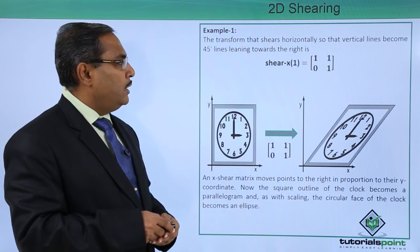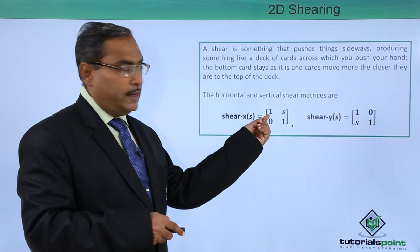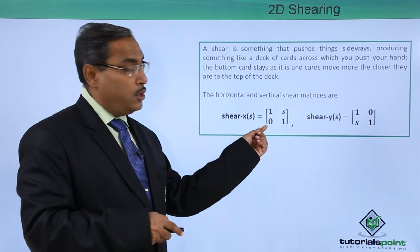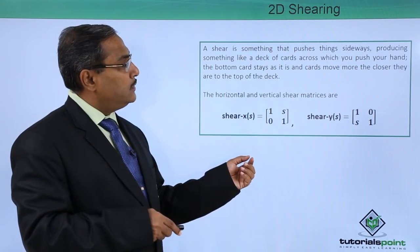Now if you go for the previous slide, here you see here will be 1, here will be 1, here will be 0 and here will be s. Now what is happening if you consider this.